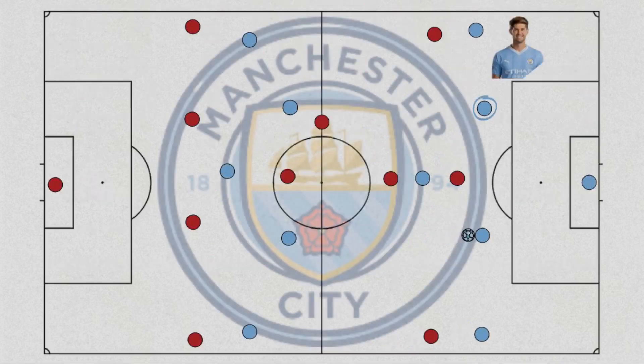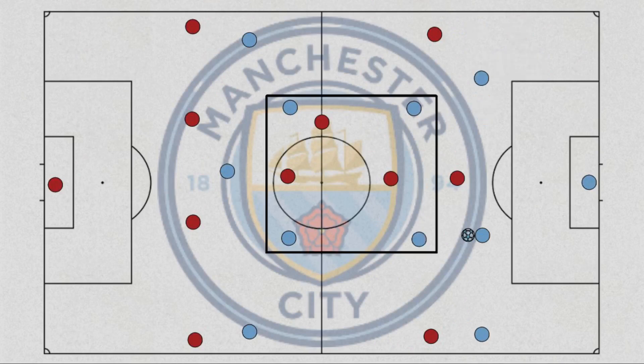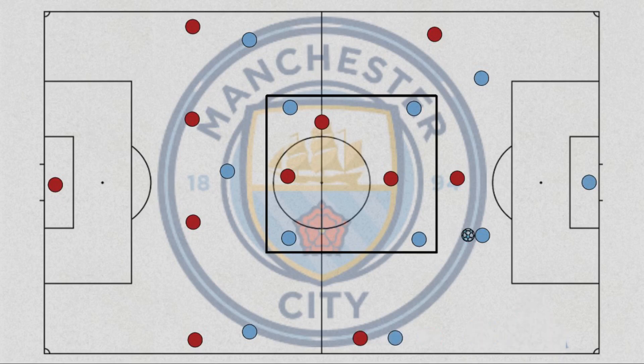Compare that to City, who used Stones from centre-back to create the box midfield but maintained width on the left with either Aké or Akanji. This stops teams crabbing across infield, which helps them maintain the central overload.